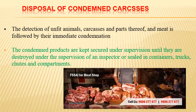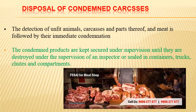Disposal of condemned carcasses: the detection of unfit animals, carcasses, and their parts is followed by immediate condemnation. The condemned products are kept secured under supervision until destroyed under an inspector's supervision, or sealed in containers, trucks, and compartments. These condemned parts carry very serious disease infections, so they must be properly disposed of — sometimes by burning or incineration, sometimes by burying, or by chemical methods — which is very important for public health and disease control.